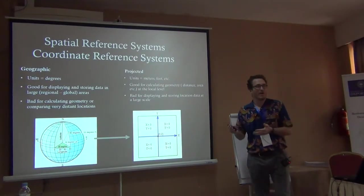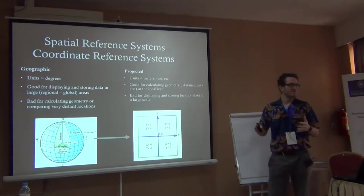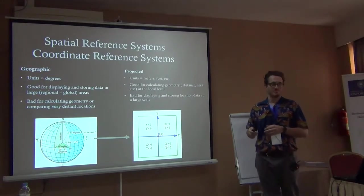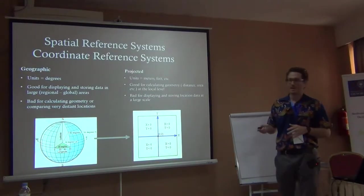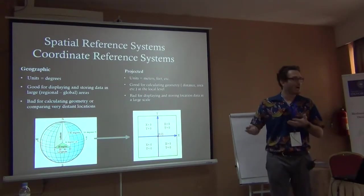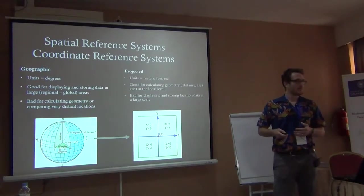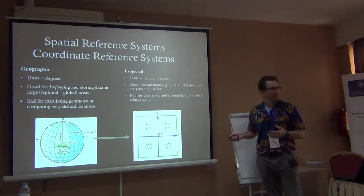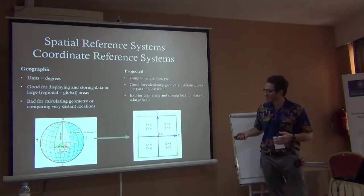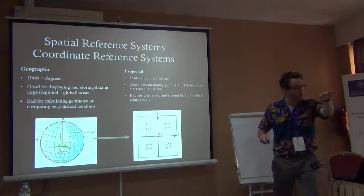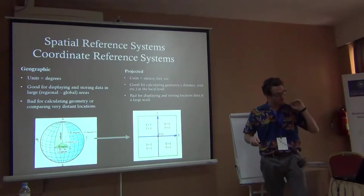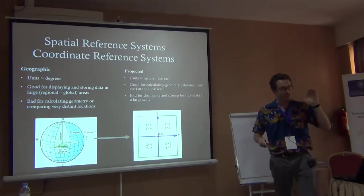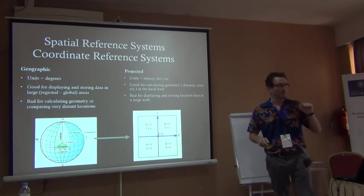This is why we have to come up with special reference systems to give this type of information meaning. The geographic system is really good for displaying and storing data, but it's really bad for calculating geometries like area and distance, because it's on a curved surface. When you give a distance, it won't account for the curve — it goes straight through, and that's not the true distance.